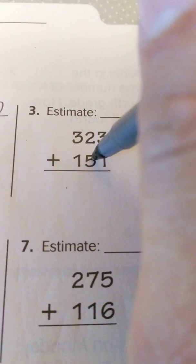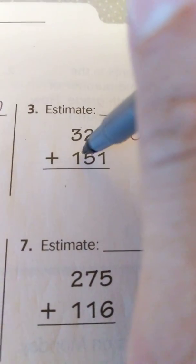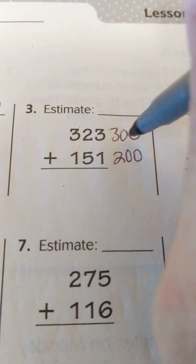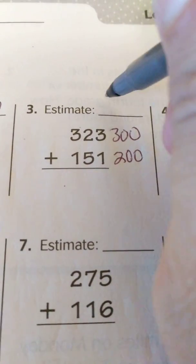We have a 5 in the tens, and if it's 5 or larger we round up, so this is going to go from 100 to 200. So 300 plus 200 would be 500, that is our estimate there.